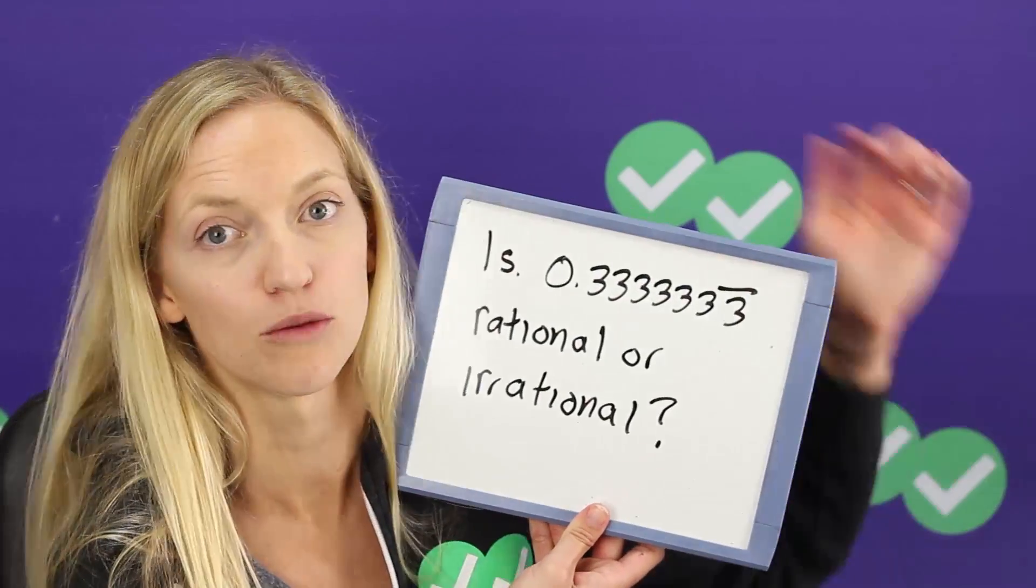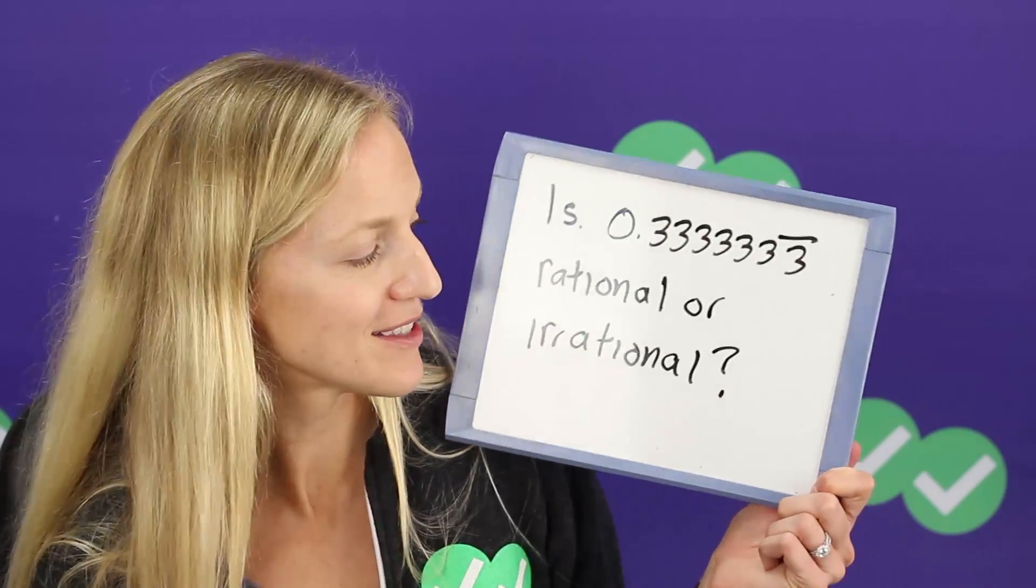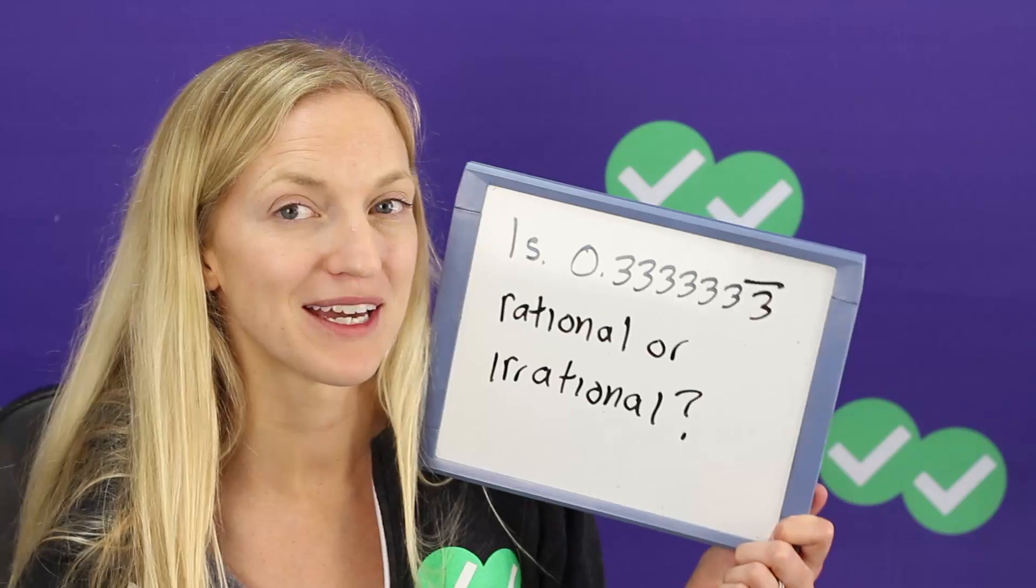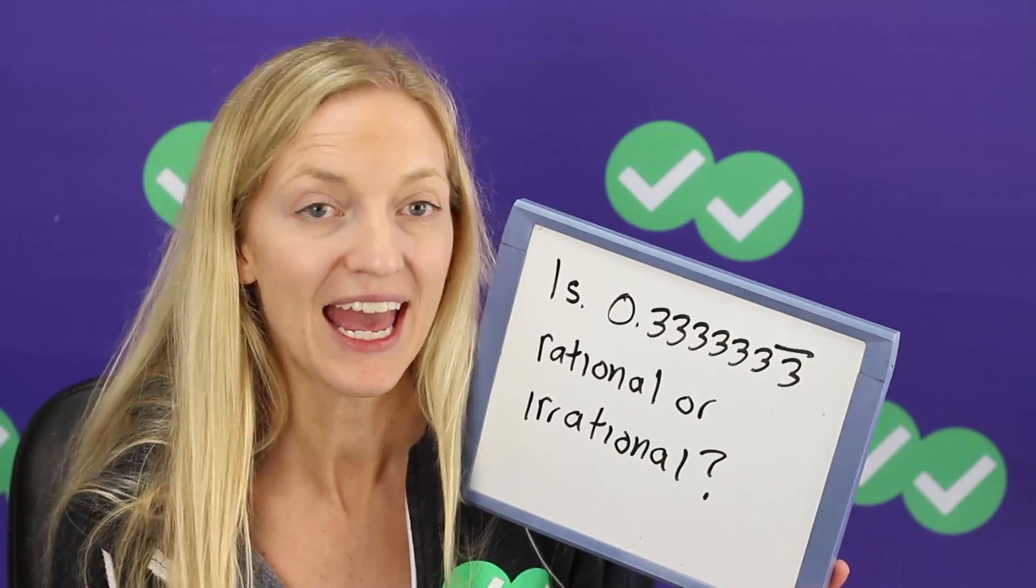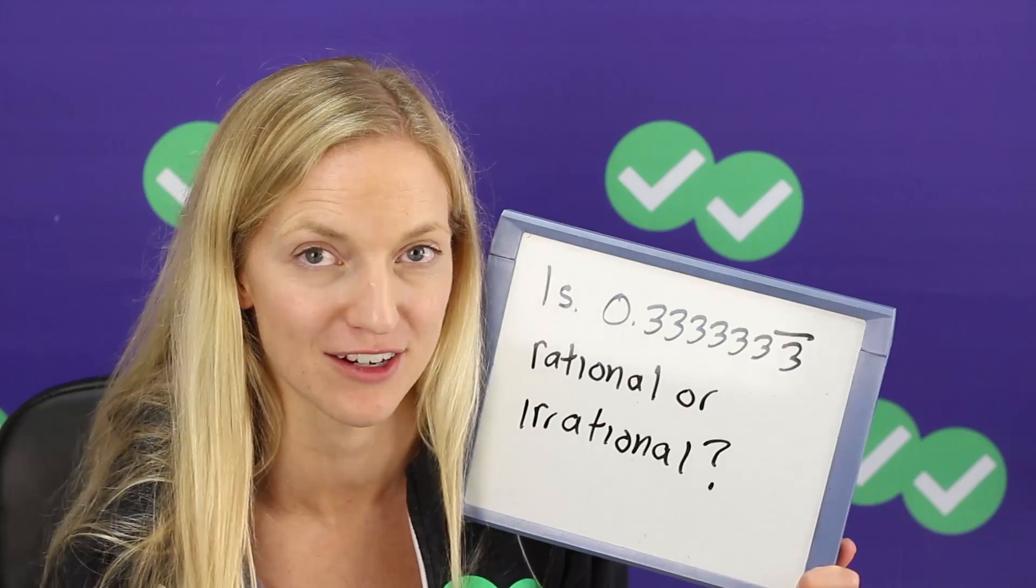So let's just peek at this example. 0.33333 and I have that little bar there to show it's repeating. 333333 to infinity. Is this rational or irrational? Well it's rational because it is repeating and that equals one third. So it can be expressed as a fraction.